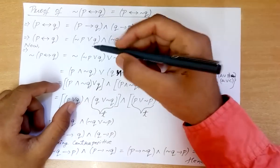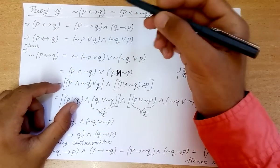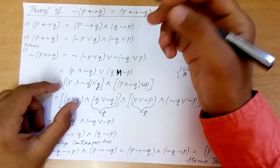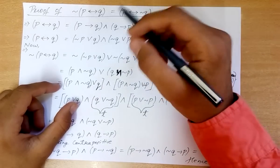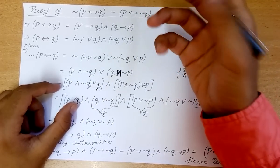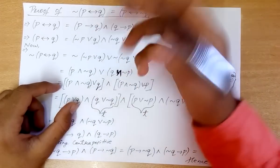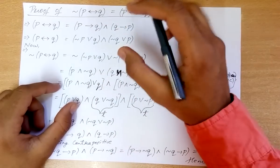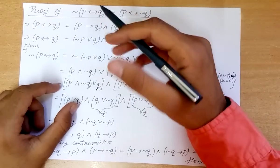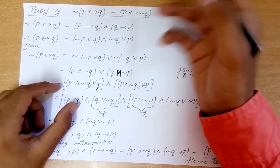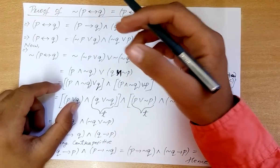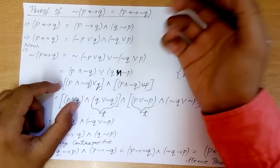Before doing previous year questions, I'll be continuing the proof of the identity which I talked about in the earlier video. I'll also be using some tricks which I talked about there, so if you haven't watched that video, I suggest you watch that first and then come to this one.